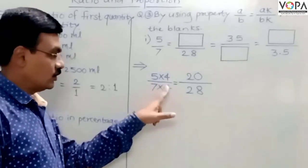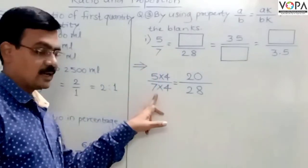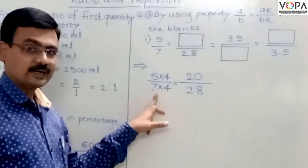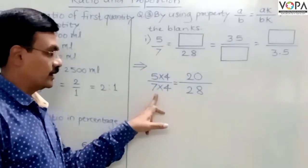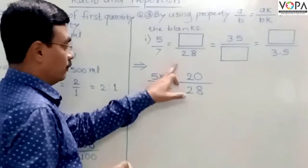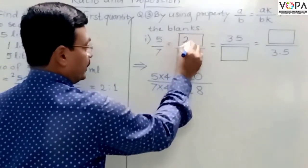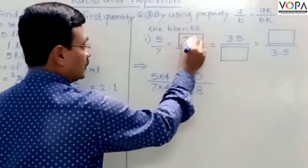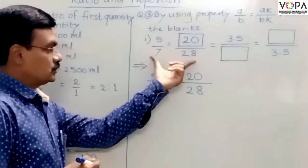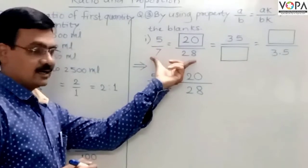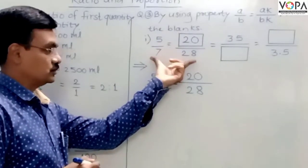In this example, we are multiplying the terms of the ratio by the same non-zero number. We got the answer 20. So 5/7 and 20/28 are equal ratios.